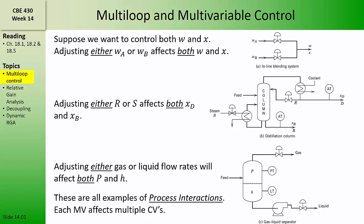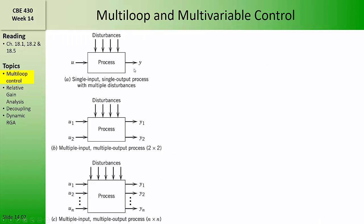All of these are examples where there are process interactions. Each manipulated variable affects more than one controlled variable. Up to this point, when designing feedback control systems, we've considered usually only a single manipulated variable and a single controlled variable so that we can focus on the control loop design.